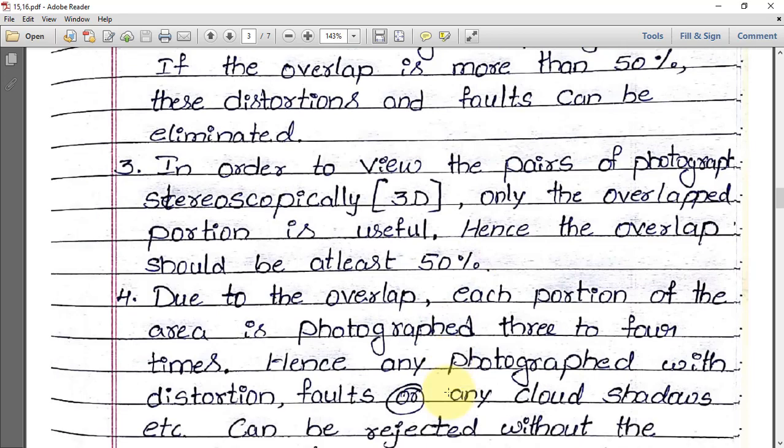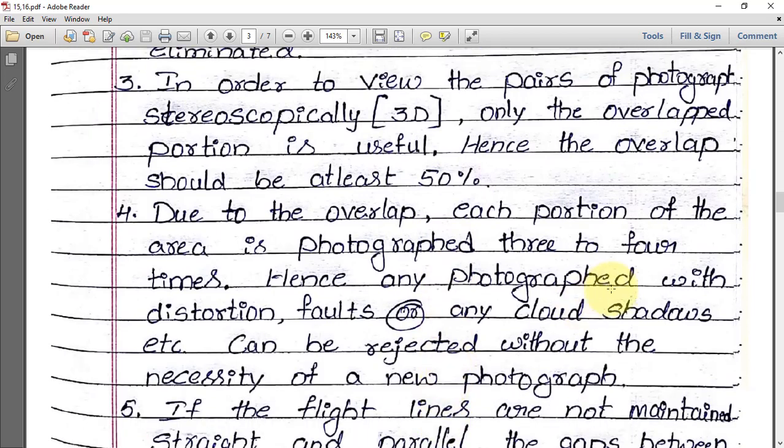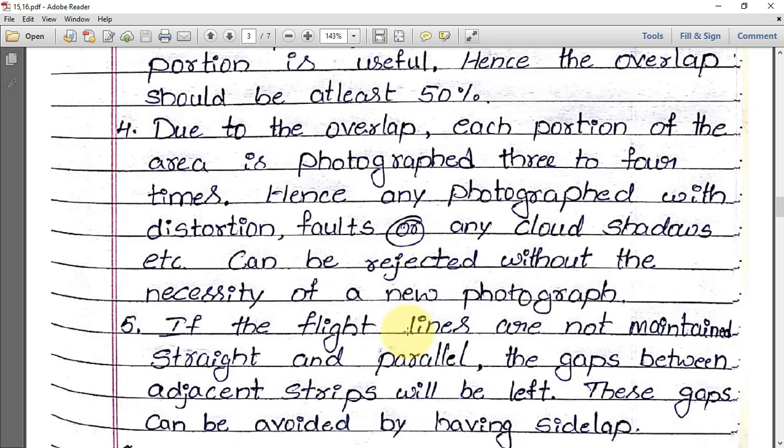The next point is that due to overlap, each portion of the area is photographed three to four times. Hence, any photograph with distortion, faults, or cloud shadows can be rejected without the need for a new photograph. If overlap is present, photographs with distortions, faults, or cloud shadows can be rejected without the necessity of flying the aircraft again, which would be uneconomical.